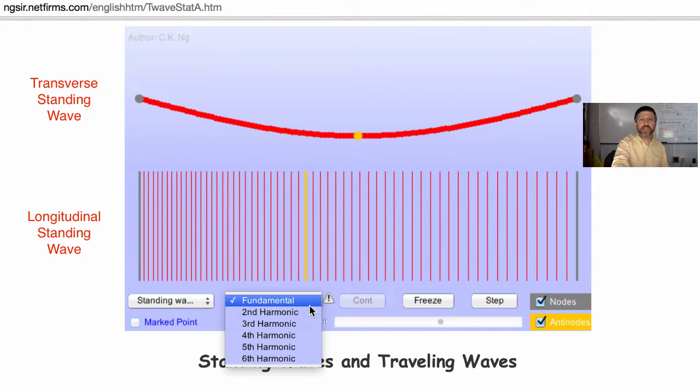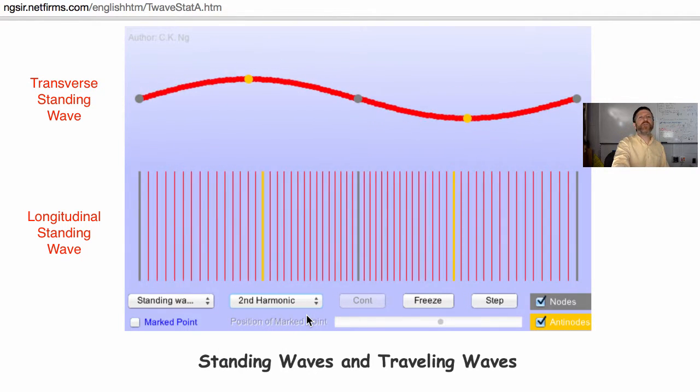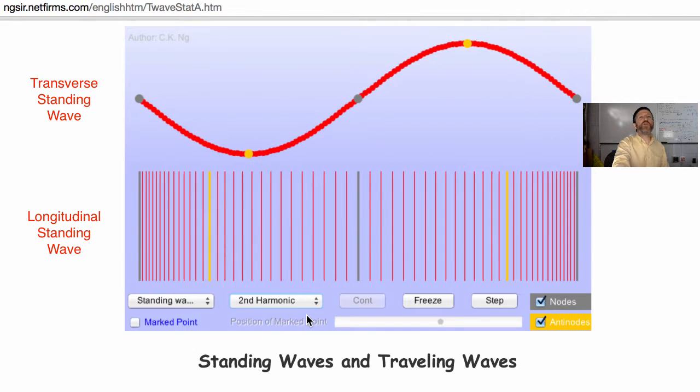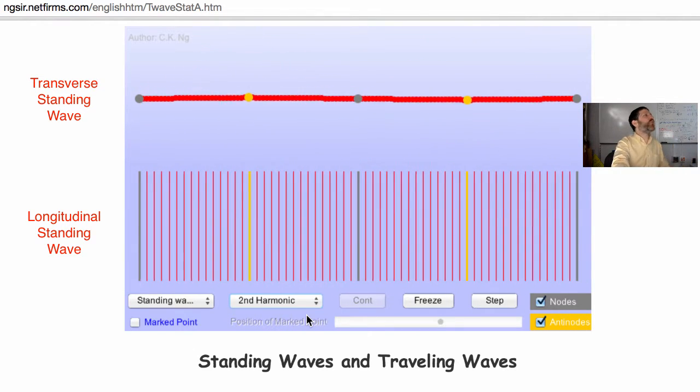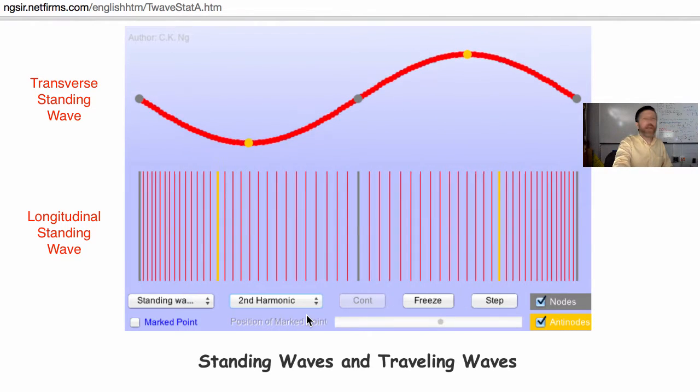Let's take a look at the second harmonic. How many antinodes does this have? Two antinodes. This is the second harmonic. n equals what for this? n equals two.